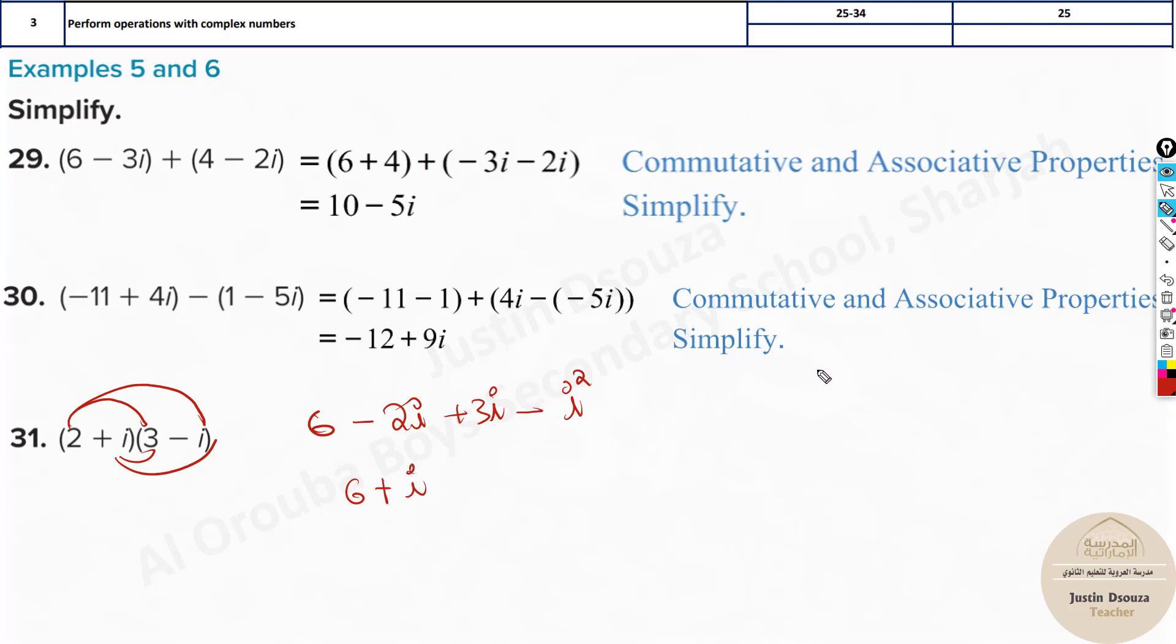What is i squared? We know i is equal to square root of negative 1. Square both sides - i squared equals minus 1.